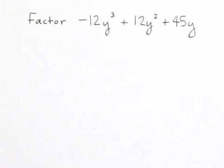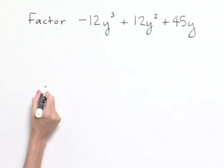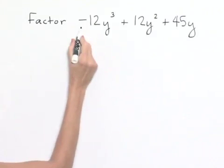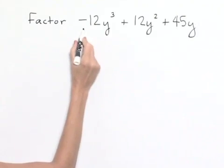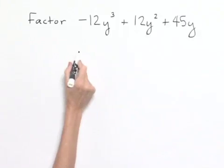Let's factor negative 12y cubed plus 12y squared plus 45y. We're going to begin by looking for our common factors. We can note that because this leading term is negative, one thing we can do is to factor out a negative value.